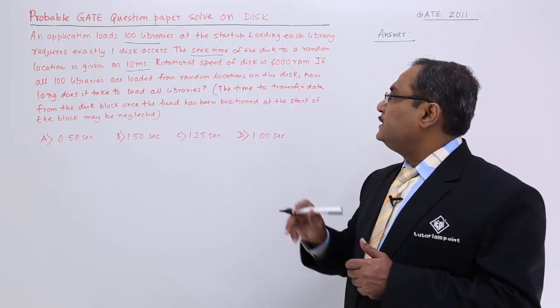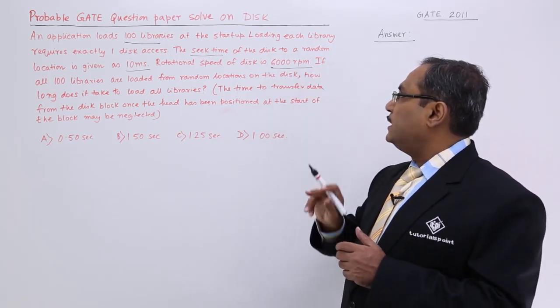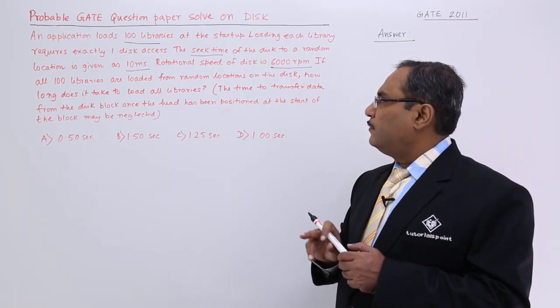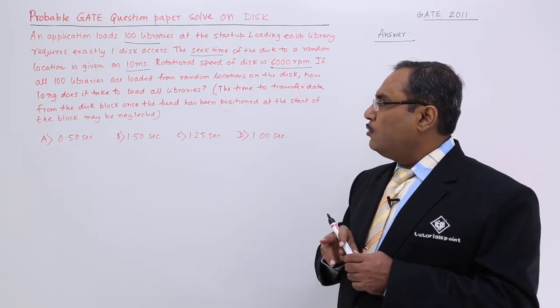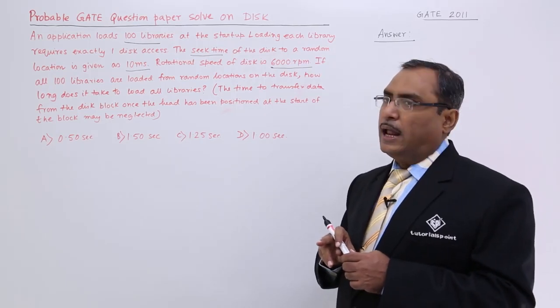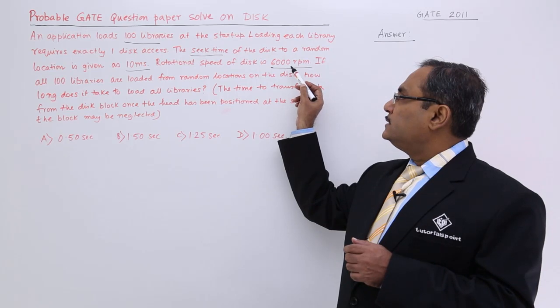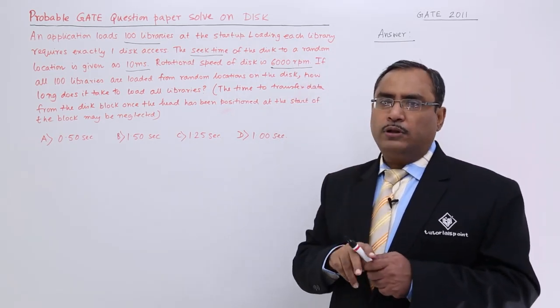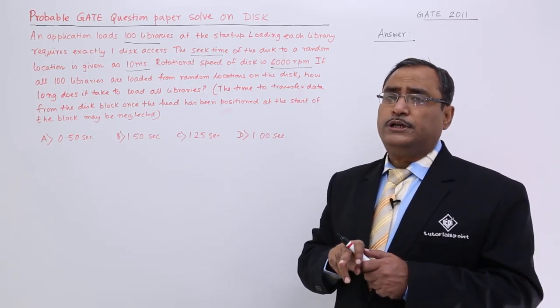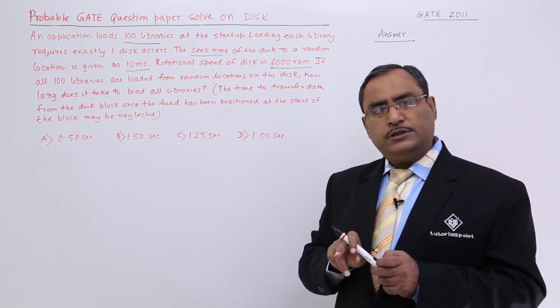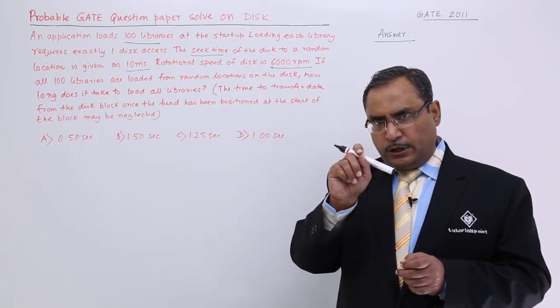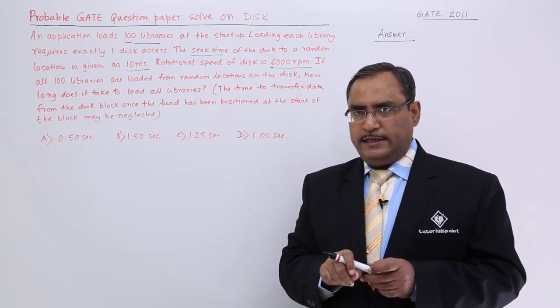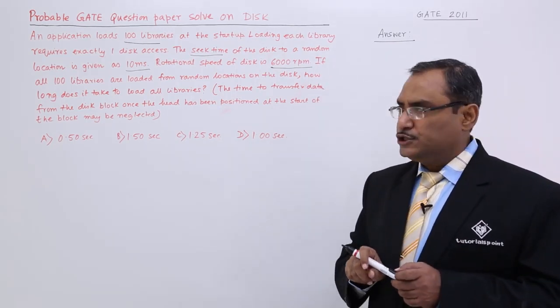Rotational speed of the disk is 6000 rpm. If all 100 libraries are loaded from random locations on the disk, how long does it take to load all libraries? Here we are getting another one that is the rotational speed. And always remember from this rotational speed, we can go for the latency, rotational latency calculation. What is the rotational latency? Time required to put our read head on the proper or desired sector is the time known as the rotational latency.